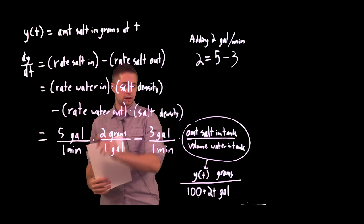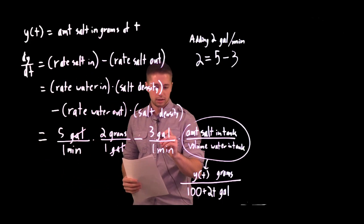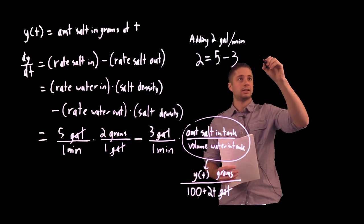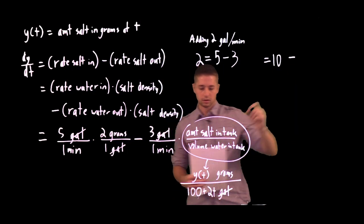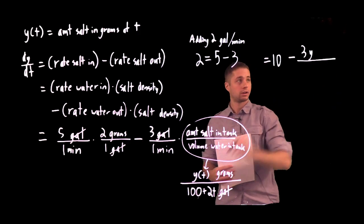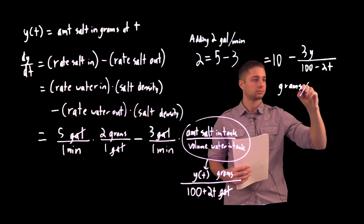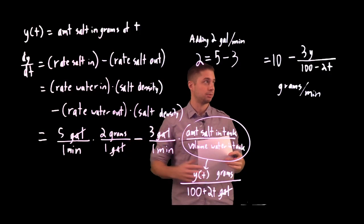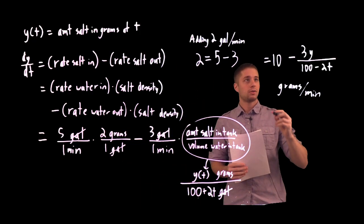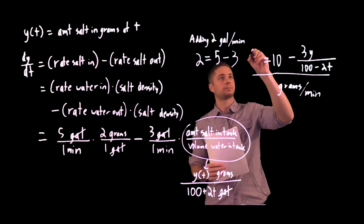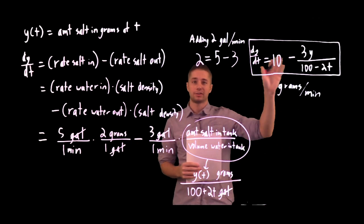If we did this right, the units should work out: gallons cancel, and we get 5 times 2 is 10 minus 3y over (100 plus 2t), in grams per minute. Both terms have units of grams per minute, which makes sense as a rate of change of grams. This gives us a differential equation describing the amount of salt in the tank at time t.